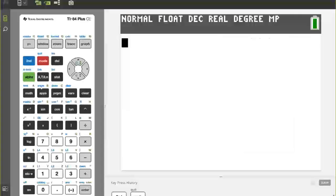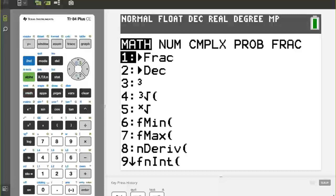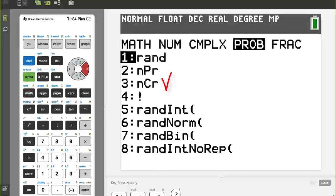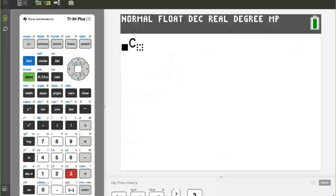Now, the combinatorics command traditionally has been under the math menu, under probability. Here it is, third option. It's there as a template, and I can go 5c3. There's my element 10.